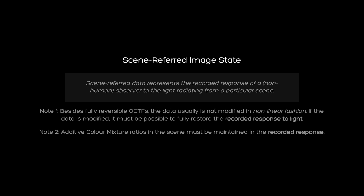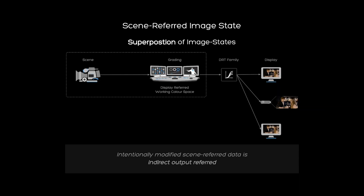This slide is a bit of a joke, but at the same time also not — it raises an important point. Scene-referred state can be a sort of superposition of actual image states, not in the quantum mechanical sense, but it shares some parallel. We cannot visualize scene-referred data directly; we need to develop it to a display-referred image state in order to view it in a meaningful way. That process of viewing adds meaning to the data. So as soon as we judge or manipulate scene-referred data while looking at it with a viewing transform, the resulting judgment and modification is indirectly tied to a certain viewing transform, display volume, and viewing condition.